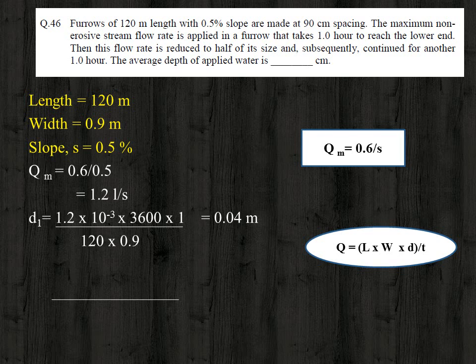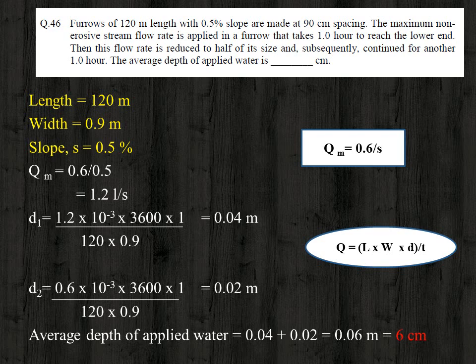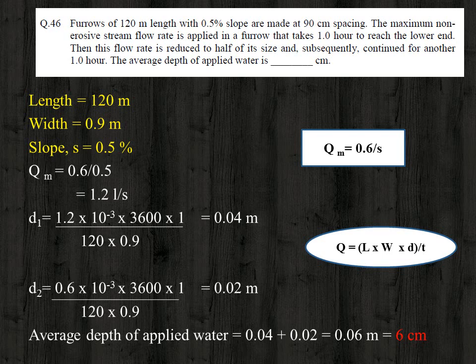The flow rate is then reduced to half: Q2 = 0.6 liter/second = 0.6 × 10⁻³ m³/s, continued for another one hour. So d2 = (0.6 × 10⁻³ × 3600) / (120 × 0.9) = 0.02 meter. The average depth of applied water is d1 + d2 = 0.04 + 0.02 = 0.06 meter or 6 centimeter.